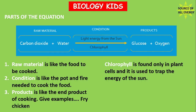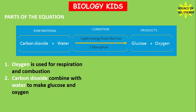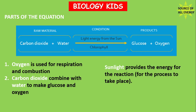The chlorophyll is found only in plant cells and is needed to trap the light energy from the sun — always remember what chlorophyll is needed for. Glucose is the food produced by plants and is used by the plants and other organisms. Oxygen is another product of photosynthesis, used for respiration and combustion — research what respiration and combustion mean. Carbon dioxide combines with water to make glucose and oxygen, and sunlight provides the energy for the reaction.